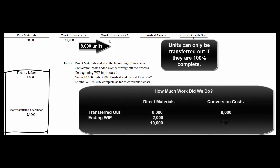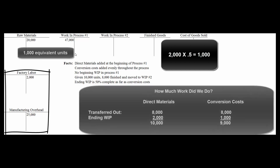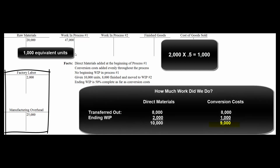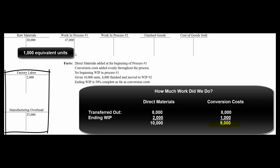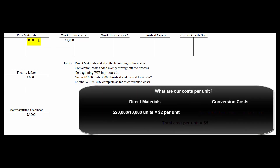From the point of view of conversion costs, those 8,000 units that went out had to be 100% complete, so that's 8,000 equivalent units worth of work. Those 2,000 units left in work in process number one were 50% complete — 2,000 units at 50% complete equals 1,000 complete units. So from the point of view of conversion costs, we did 9,000 equivalent units worth of work: 8,000 that moved on, plus 1,000 equivalent units from the 2,000 that are 50% complete.